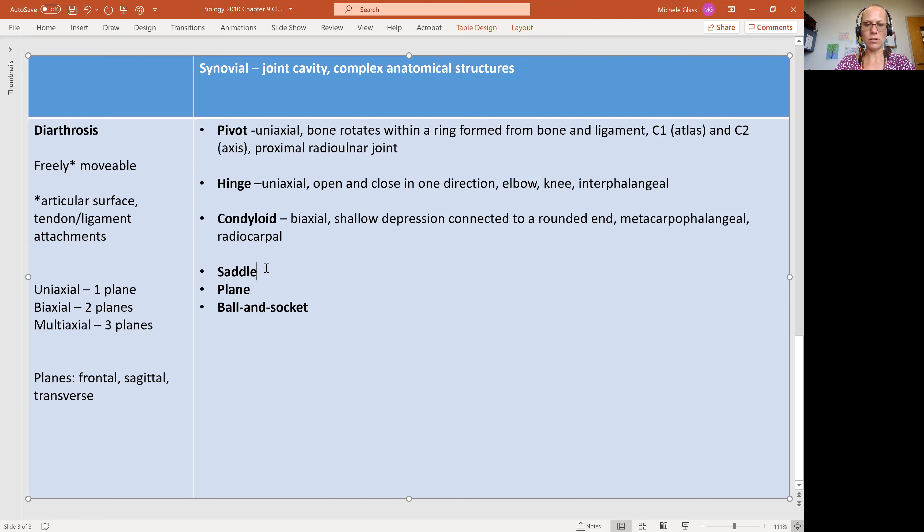Okay, moving next to the saddle. In the case of the saddle, we have another biaxial joint. So again, we're able to move in two planes. In the case of the saddle, it's named because both bones have a saddle shape to the end. So they fit together like a rider on a saddle.